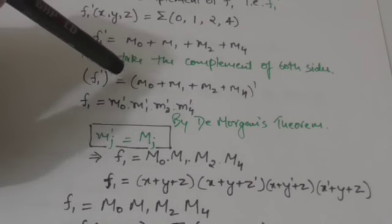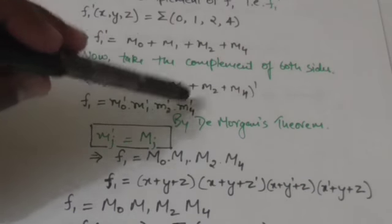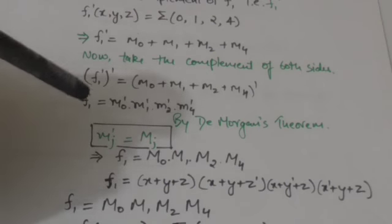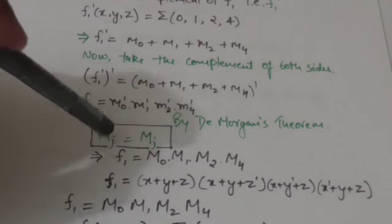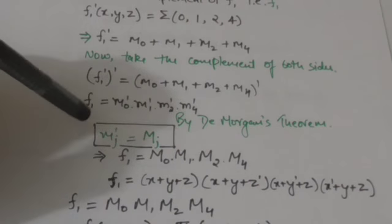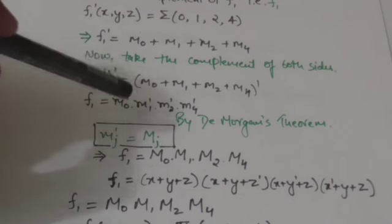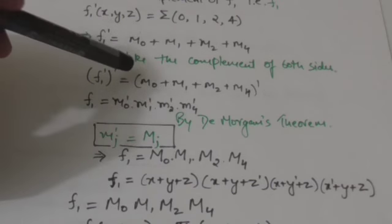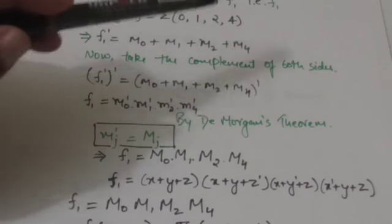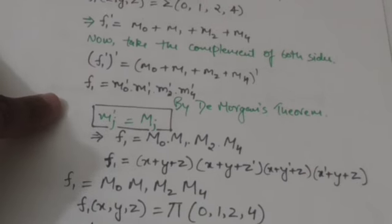...m0 complement AND m1 complement AND m2 complement AND m4 complement. As we know, the complement of mj — that is the complement of a min term — is the max term of the same subscript. So we can replace m0 complement by max term M0, m1 complement by max term M1, m2 complement by max term M2, and m4 complement by max term M4.